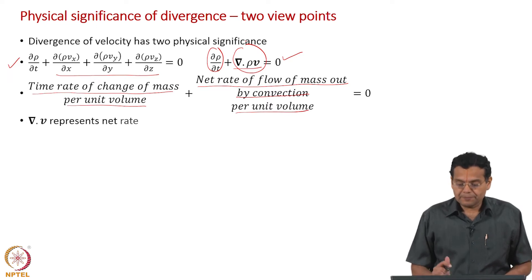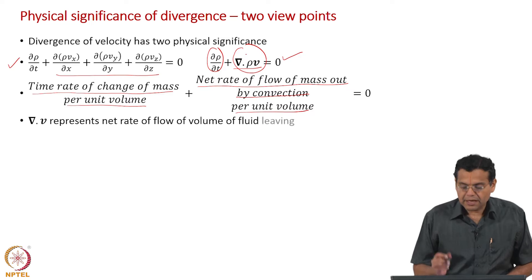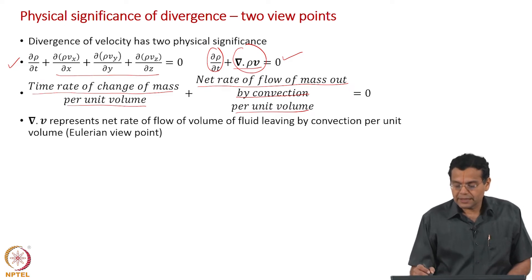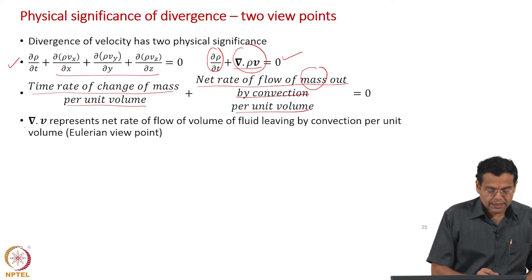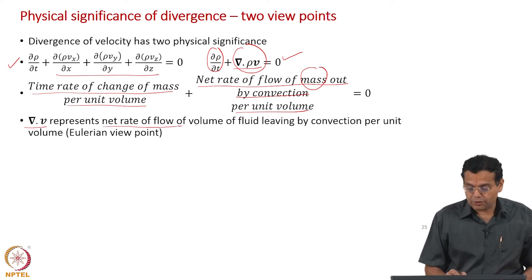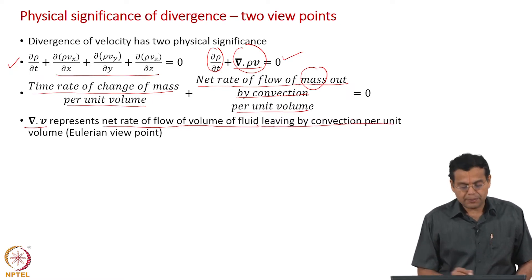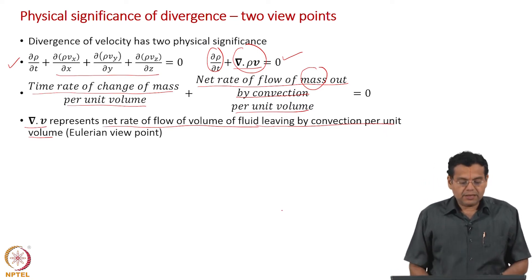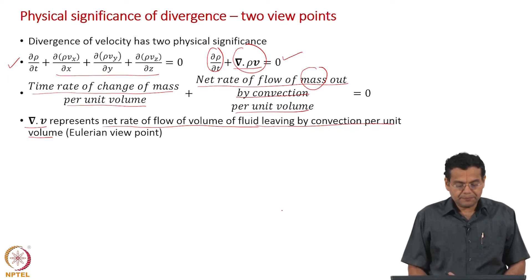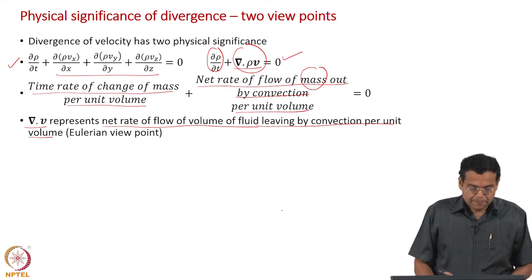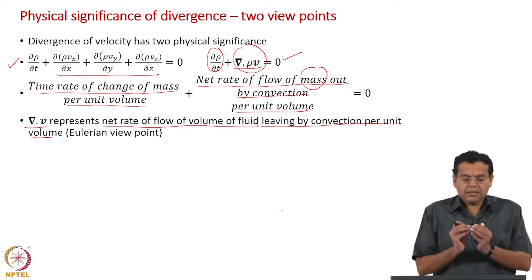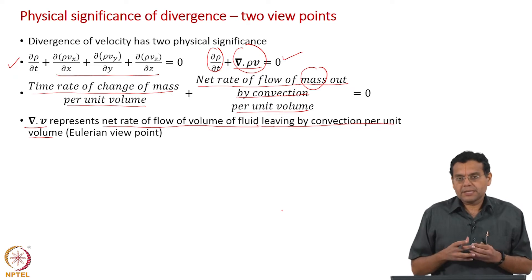If we take ∇·v — that is, if we factor out density from ∇·(ρv) and consider only ∇·v — it represents the net rate of flow of volume of fluid leaving by convection per unit volume. In the case of ∇·(ρv) it was mass; for ∇·v the same physical significance applies but for volume instead of mass. This gives the physical significance of ∇·v from a Eulerian viewpoint: net rate of flow of volume of fluid leaving by convection per unit volume.